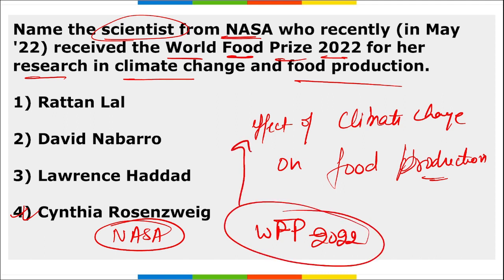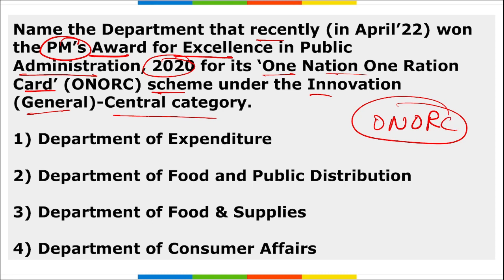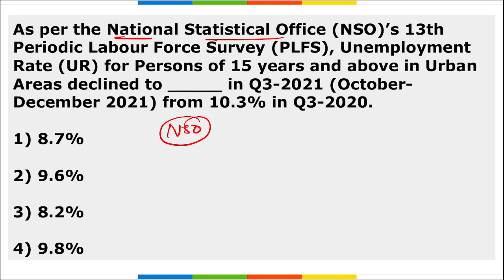The Department of Food and Public Distribution won the Prime Minister's Award for Excellence in Public Administration 2020 for its One Nation One Ration Card scheme under the innovation general category. PM Modi conferred the award on the occasion of the 15th Civil Services Day, observed on 21st April.